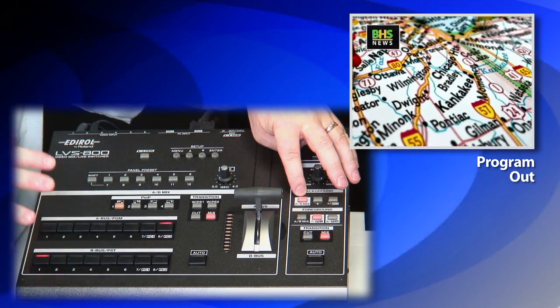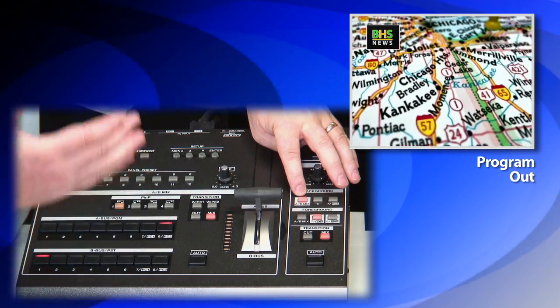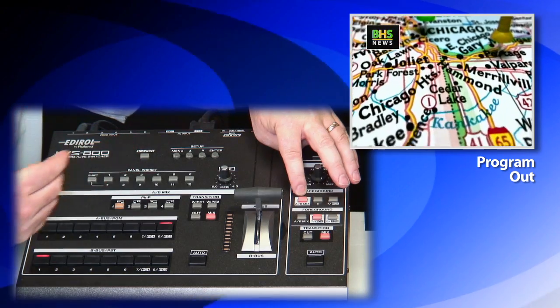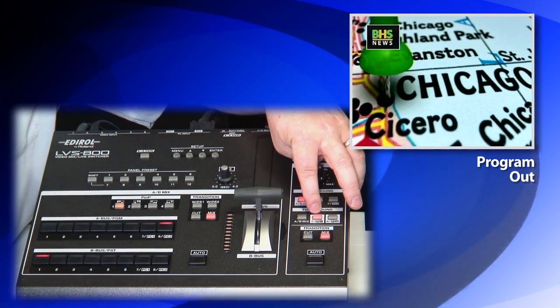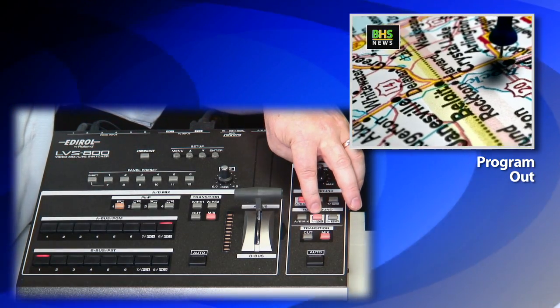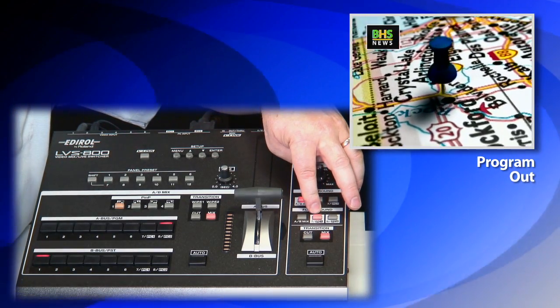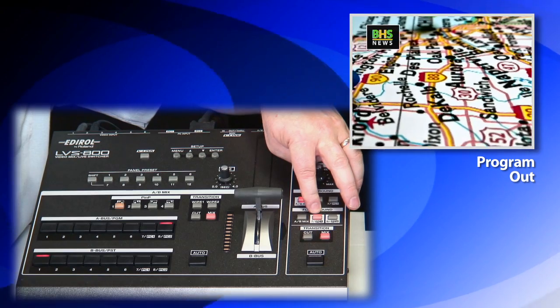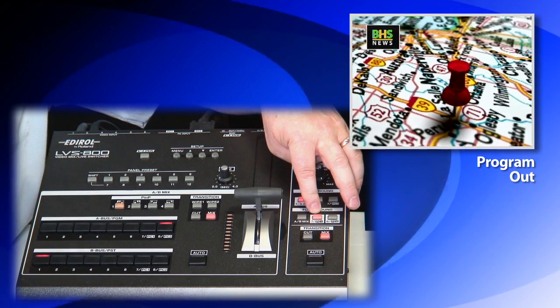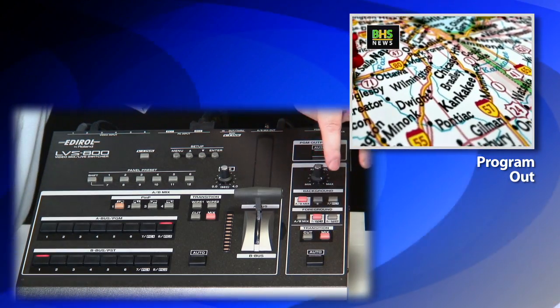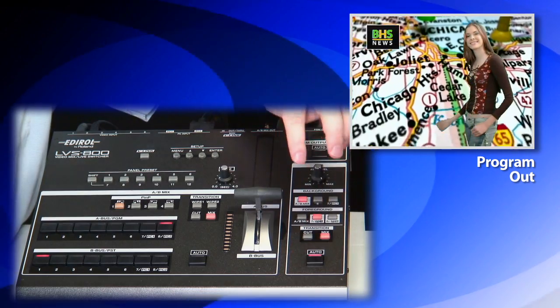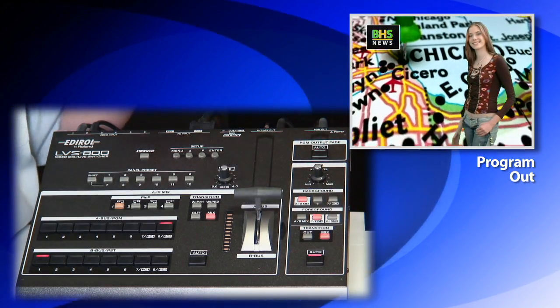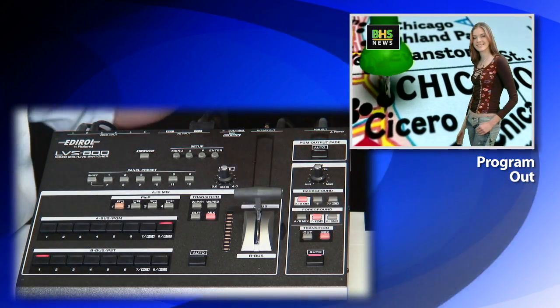So whatever we're seeing there is the background. Our student is in input number seven as we mentioned earlier — that's a camera set on her just in front of a green screen. We set the key on and she appears.